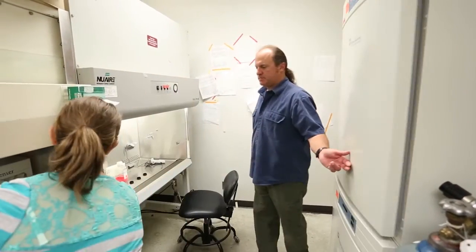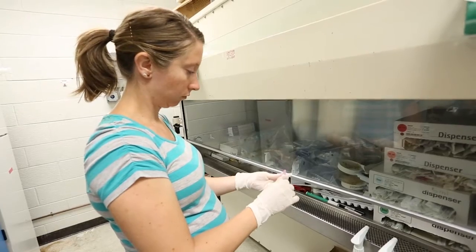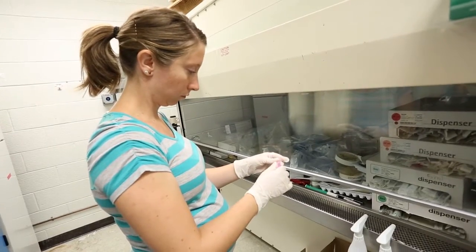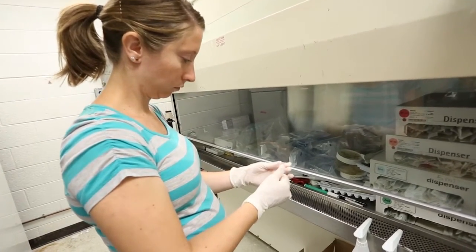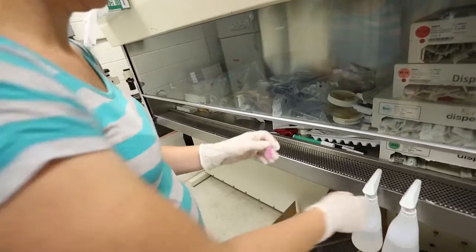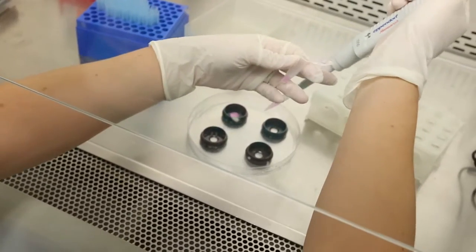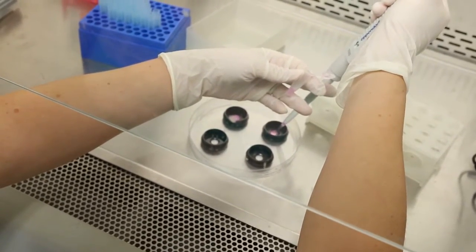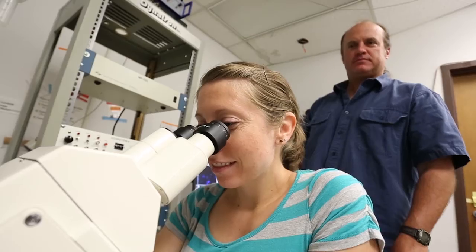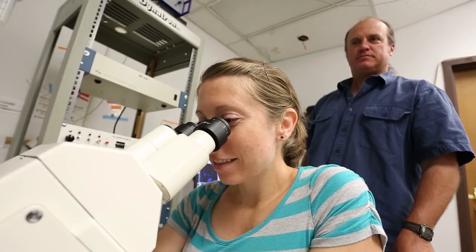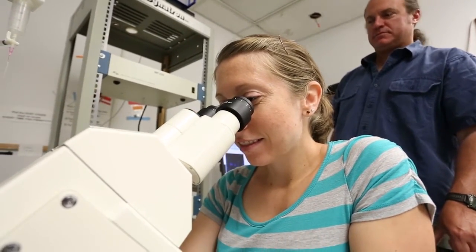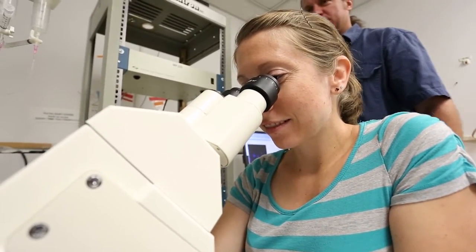I work in my lab with graduate students and undergraduate students on various aspects of the research projects. A very common technique we use is mammalian cell culture, and we then use a fluorescence microscope that allows us to study individual molecules, individual proteins, or individual ions and signaling molecules within a living cell.